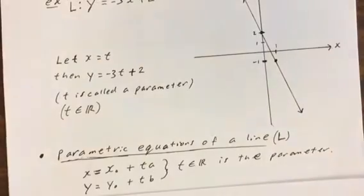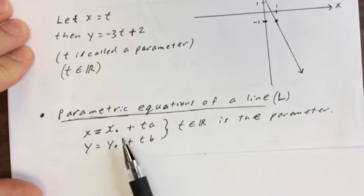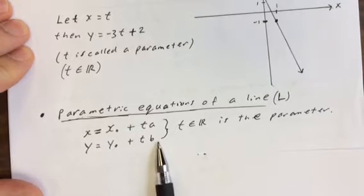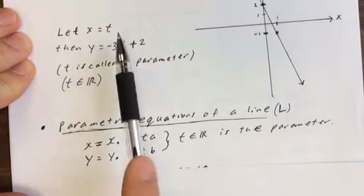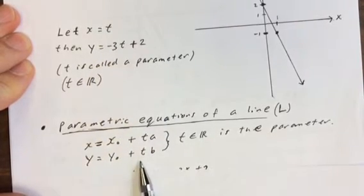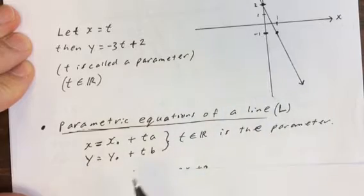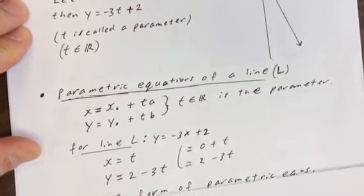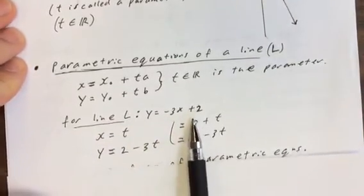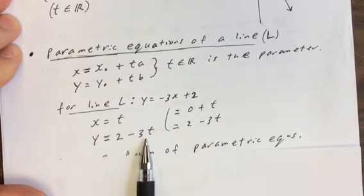This sets us up for parametric equations. Generally, parametric equations are in the form: x equals x-naught plus ta, and y equals y-naught plus tb. What we wrote above — x equals t, y equals negative 3t plus 2 — looks like that form. So for the line y equals negative 3x plus 2, a parametric equation is x equals t and y equals 2 minus 3t.